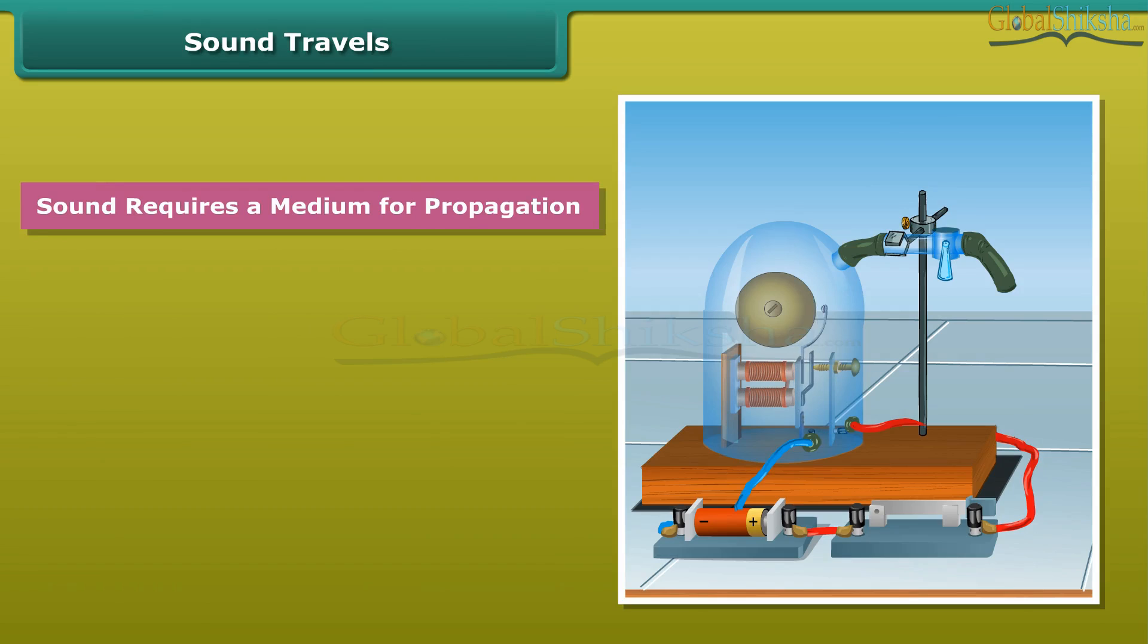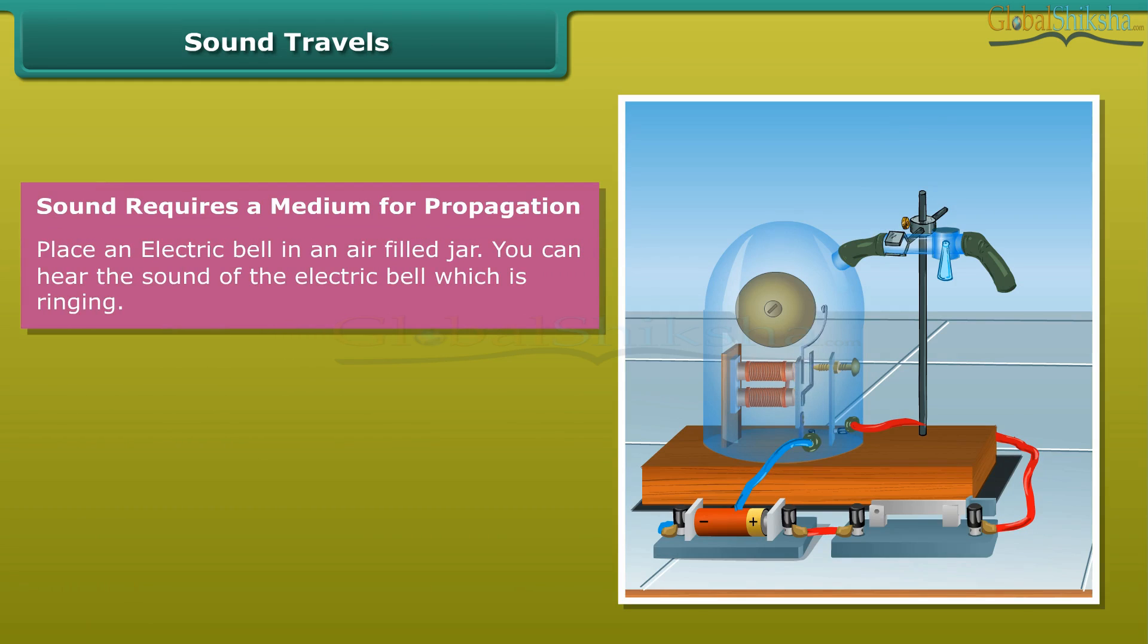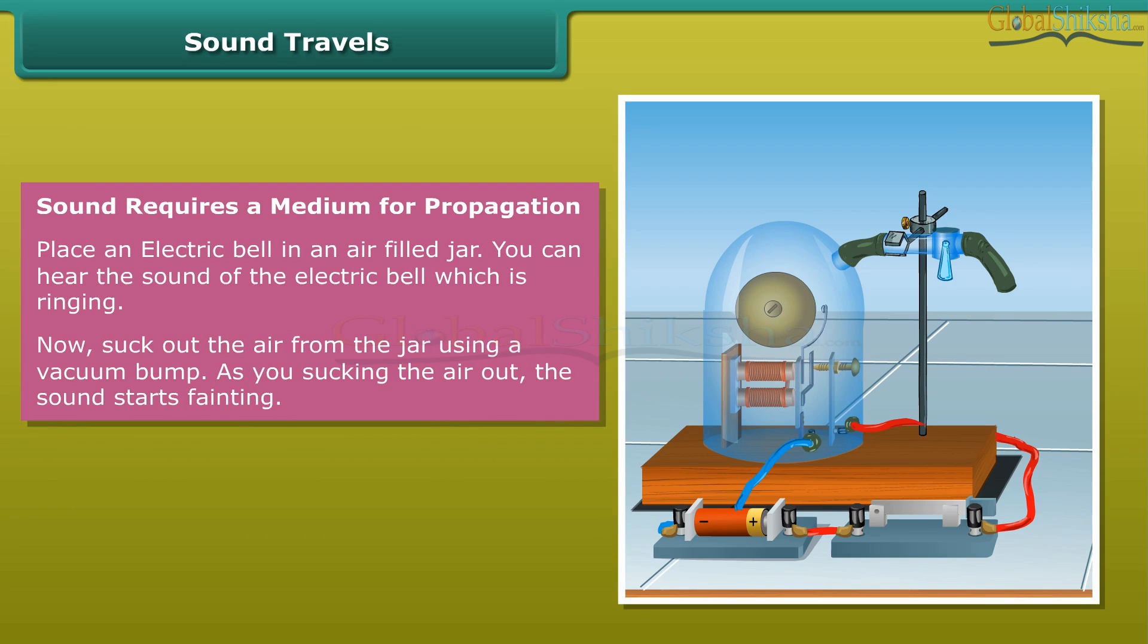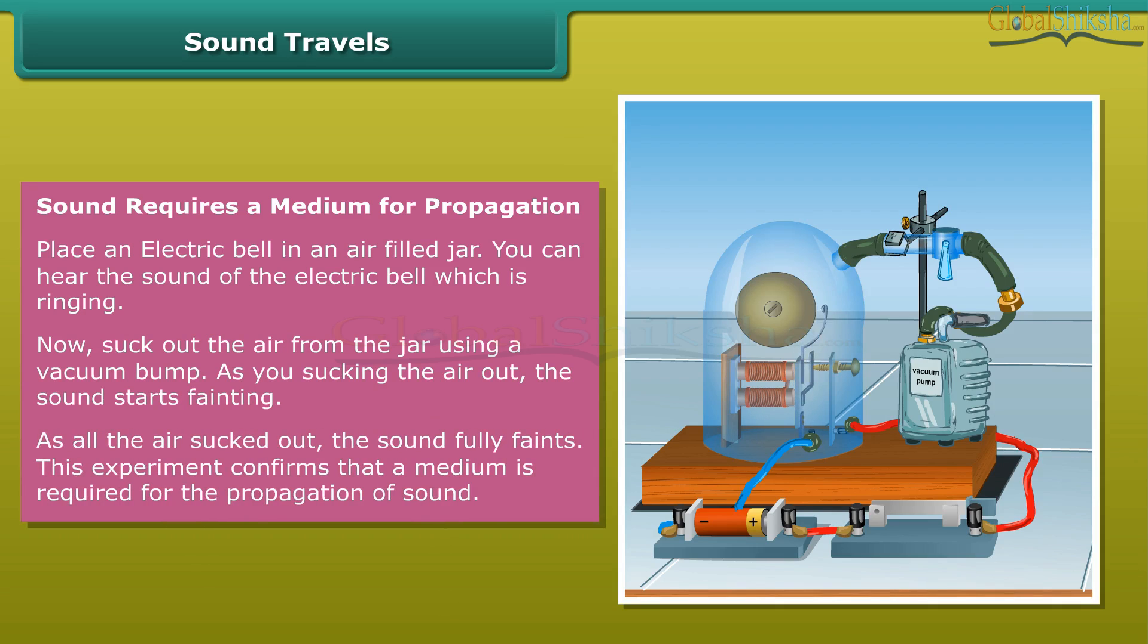Sound requires a medium for propagation. Place an electric bell in an air-filled jar. You can hear the sound of the electric bell which is ringing. Now suck out the air from the jar using the vacuum pump. As you suck the air out, the sound starts fainting. As all the air sucked out, the sound fully faints. This experiment confirms that a medium is required for the propagation of sound.